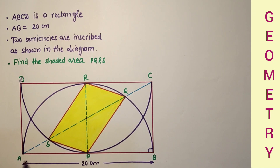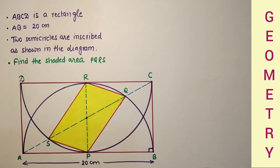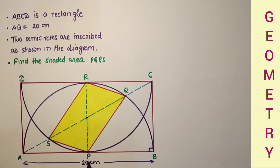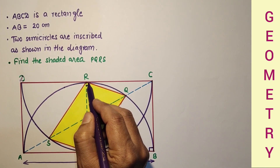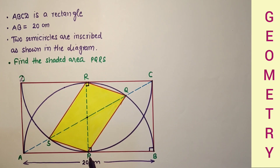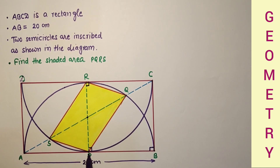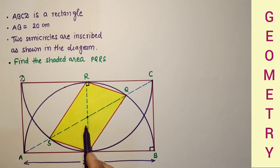We are given that the length of the rectangle is 20 cm. We can find the width since AB is the diameter, and the diameter equals the length of the rectangle, which is 20 cm. From center P, the radius goes to the circumference, giving us AP equal to PB equal to 10. Therefore PR, also a radius, is 10. So CB is 10, RP is 10, and DA is 10.